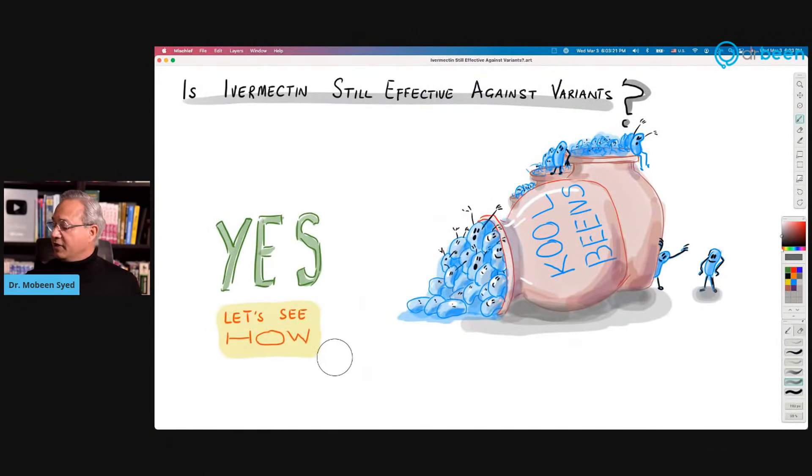Let's start from here. The question is: is ivermectin still effective against variants? Let's spill the beans. This was my depiction of spilling the beans or spilling the cool beans. The answer is yes. Then the question becomes: why is it yes? What is ivermectin doing that even vaccines are struggling against various variants, but ivermectin - what is so magical about it?